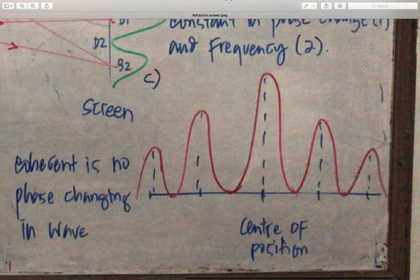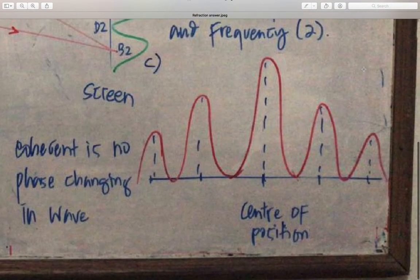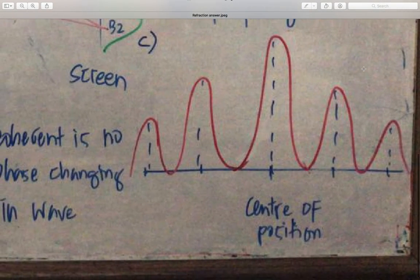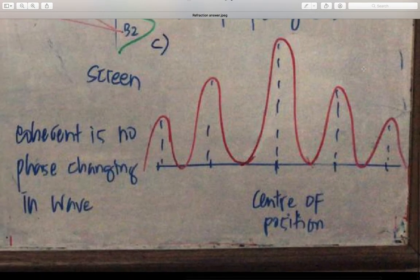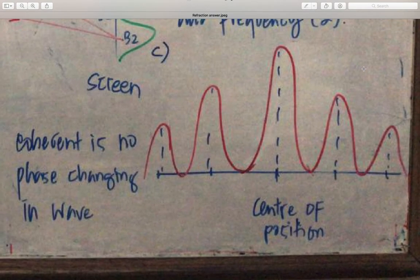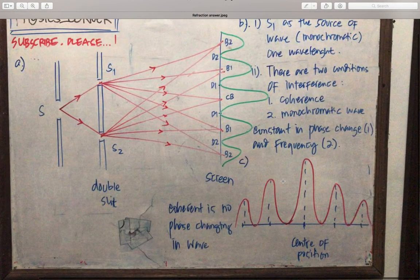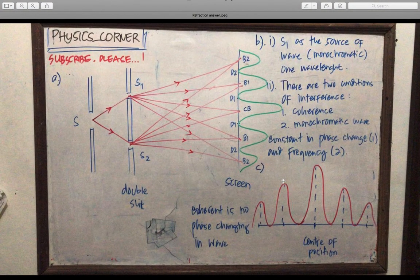Graph for answer C: On the line, red as the amplitude and the center of position has the maximum intensity. Coherence is no phase changing in light. And this is the whole answer to the question.